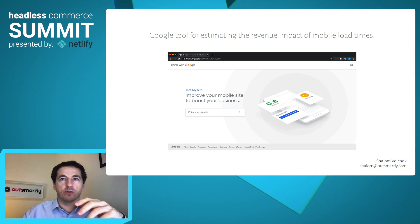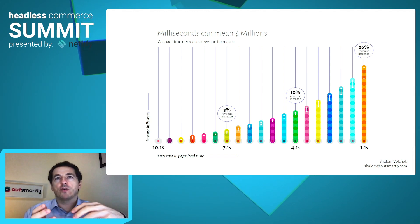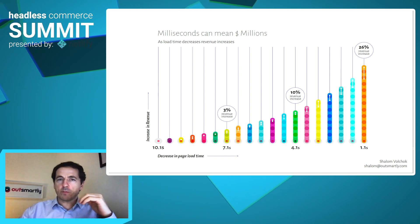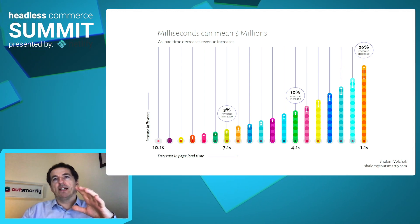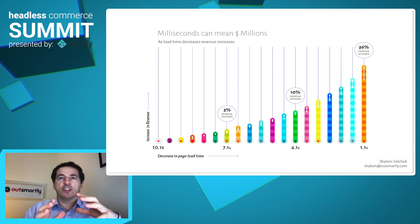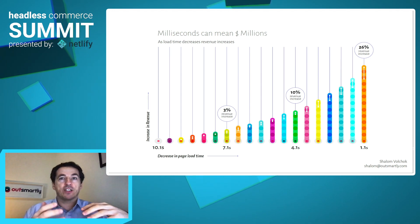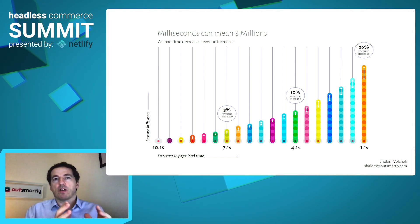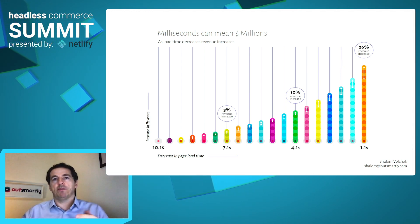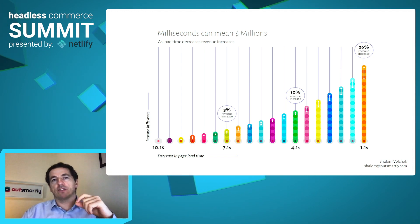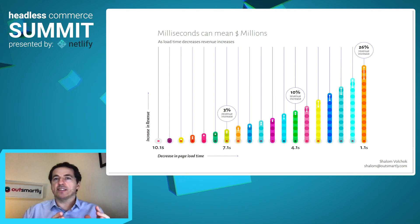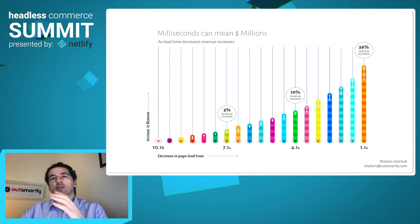I gathered data from this tool and generated this next chart. Here we see the correlation between load time and revenue going from 10 seconds to one second in 500 millisecond increments. The first time I looked at this data, I was a bit shocked to see that the data suggests the value of 500 milliseconds is actually increasing as a site becomes faster. The big bubbles on this chart each mark a three-second improvement in load time, yet as the site becomes faster, this value increases. So going from 10 seconds to seven seconds is not nearly as valuable as going from four seconds to one second.